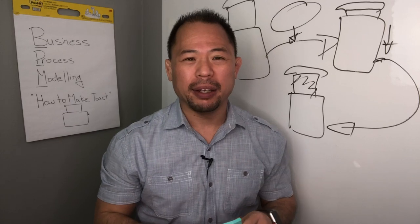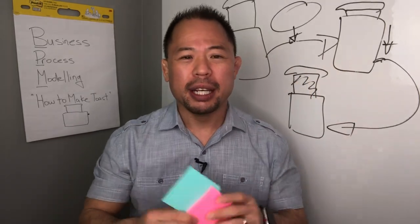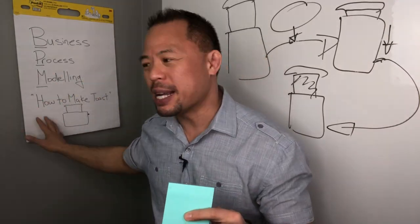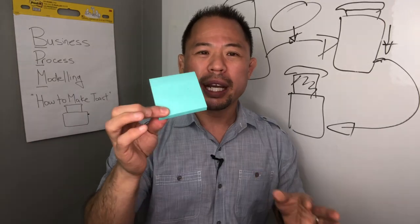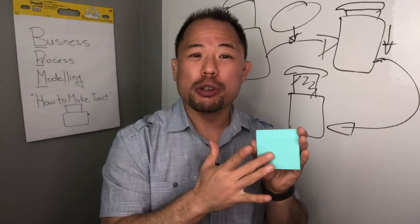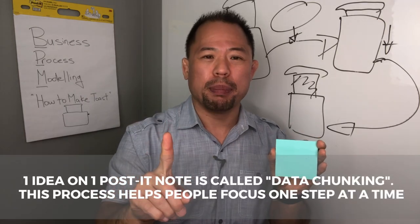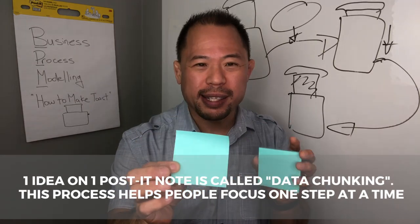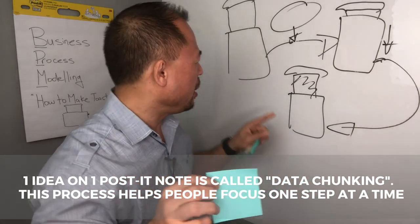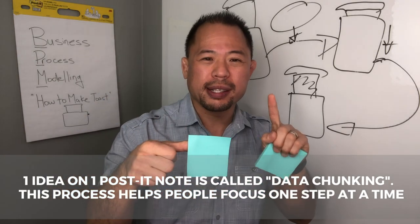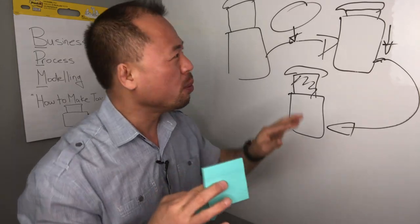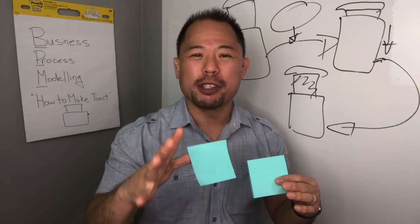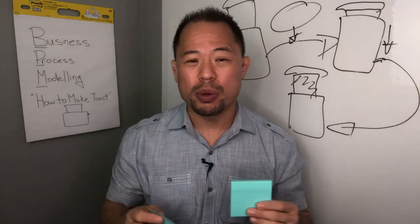What I prefer to do in a meeting when I'm doing a business process modeling session is to give everybody a pad of post-it notes. Here's how this would work: the process we're trying to identify is how to make toast. We're going to get everybody a pad of post-it notes, and on each post-it note, everybody draws out one step. It's very important that each post-it note denotes one step. One step might be putting the toast in the toaster. The second step on the second post-it note would be pressing down on the plunger. You give everybody enough time to write down the process, and this is what the end result will look like.